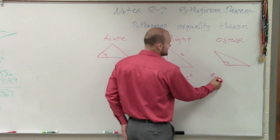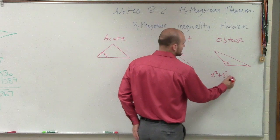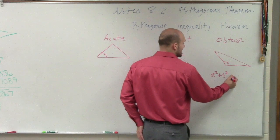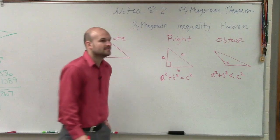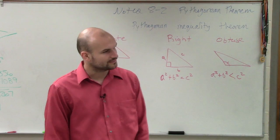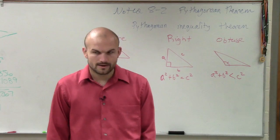However, if we take a squared plus b squared, and that is less than c squared, then we're going to have an obtuse angle in the triangle.